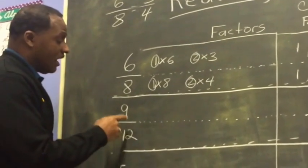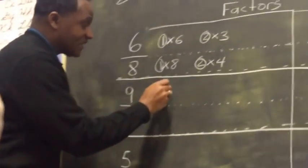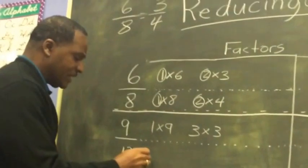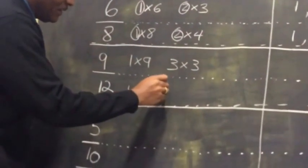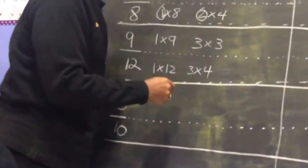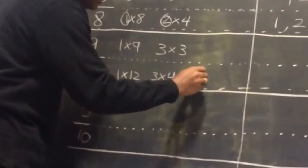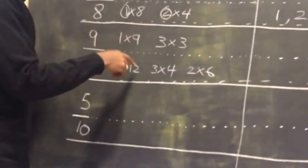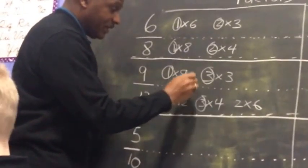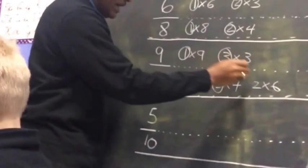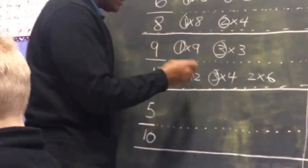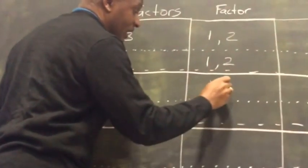Now let's look at the next one. The factors of 9 are: 1 times 9 and 3 times 3 equals 9. The factors of 12 are: 1 times 12, 3 times 4, and 2 times 6 equals 12. Now let's find the common factors between 9 and 12. There's a 1 and there are 3s — a 3 and a 3. So the common factors are 1 and 3, and there are no other common factors.